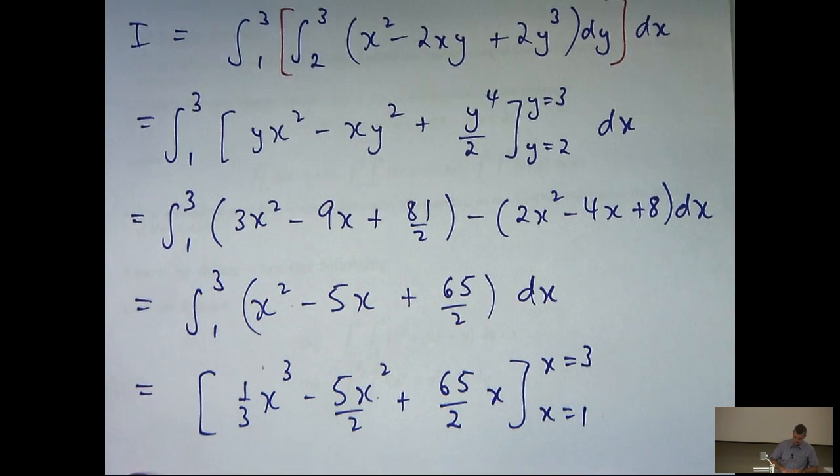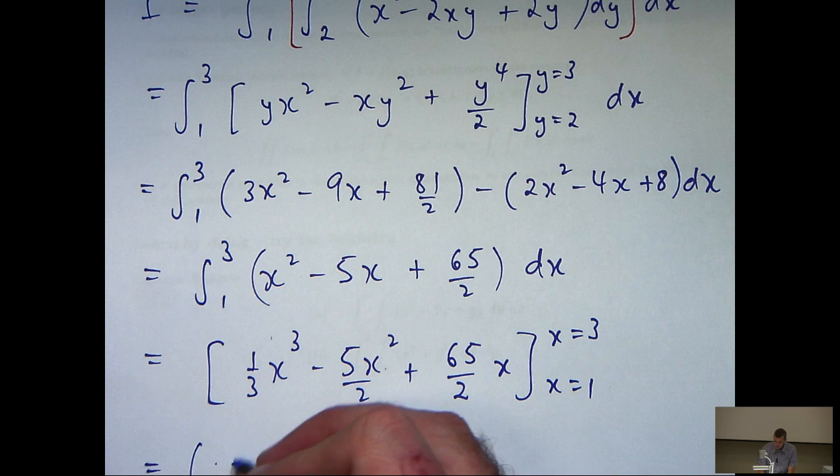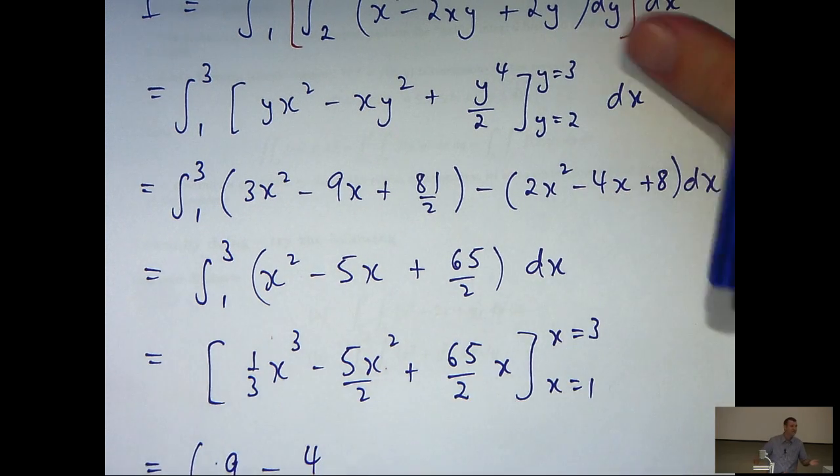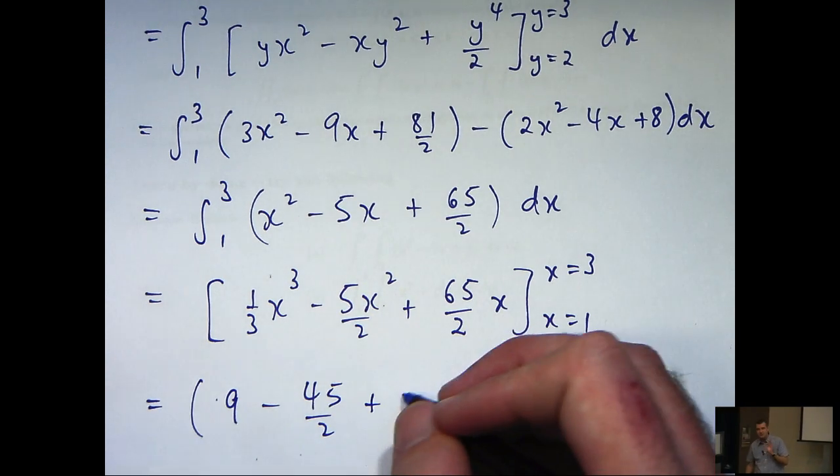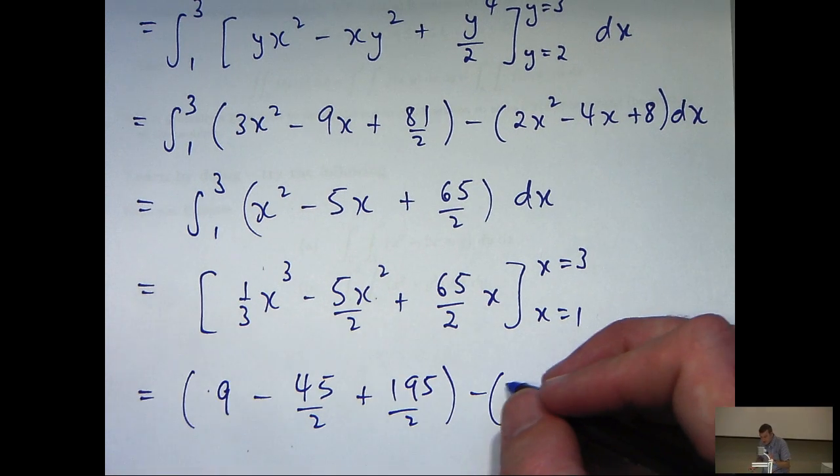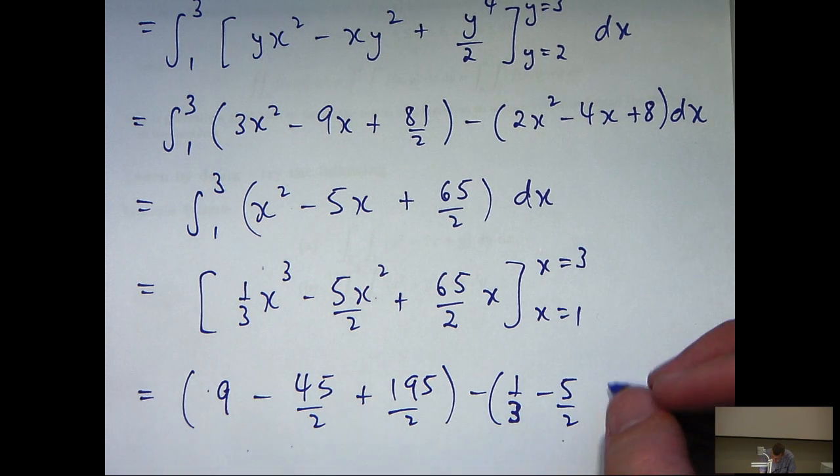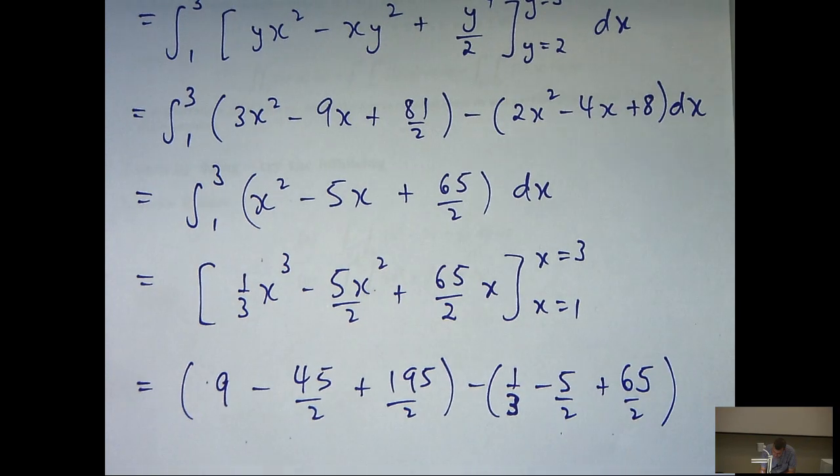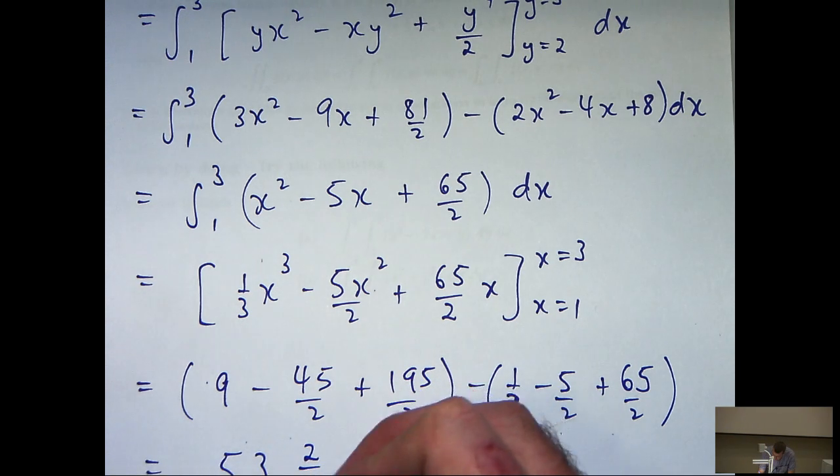So now it's just substituting in these values and a little bit of arithmetic. I'm not going to bore you with all the calculations here. And just cleaning up here, you'll get 53 and 2 thirds.